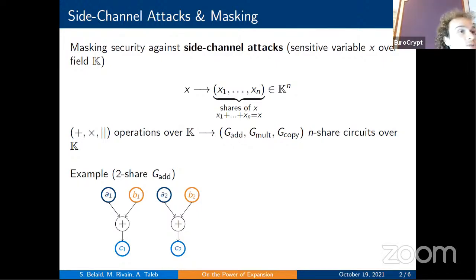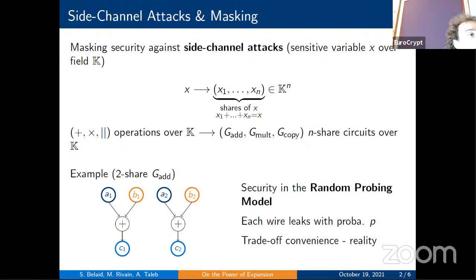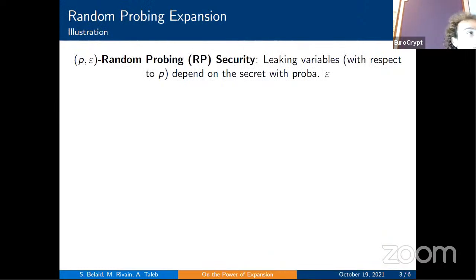The random probing model offers an interesting tradeoff between closeness to physical leakage reality and convenience for security proofs. A circuit is random probing secure if the leaking variables, defined with respect to probability P, depend on the secret with probability at most epsilon. With probability at most epsilon, the leaking wires during execution will need all secret shares to be reconstituted. The main goal is to decrease epsilon as much as possible, since it serves as the security parameter.